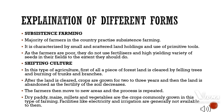Shifting agriculture: In this type of agriculture, first of all, a piece of forest land is cleared by felling trees and burning of trunks and branches. After the land is cleared, crops are grown for 2-3 years and then the land is abandoned as the fertility of the soil decreases. The farmers then move to new areas and the process is repeated. Dry paddy, maize, millets, and vegetables are the crops commonly grown in this type of farming. Facilities like electricity and irrigation are generally not available to them.